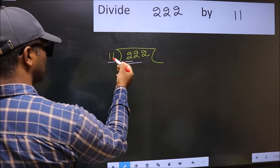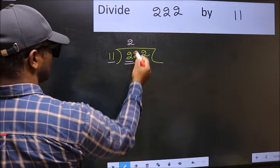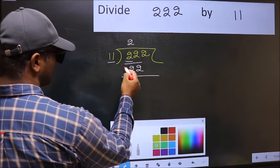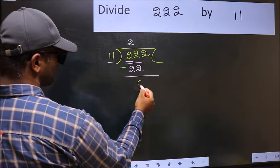When do we get 22 in 11 table? 11 times 2 is 22. Now, we should subtract 22 minus 22, 0.